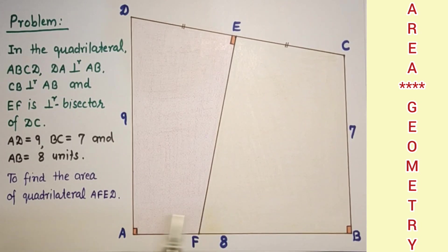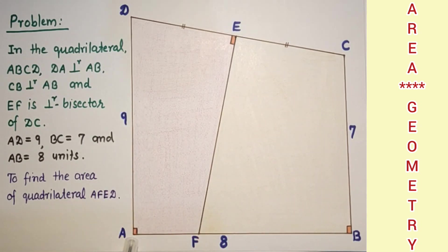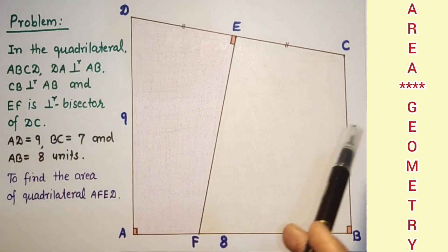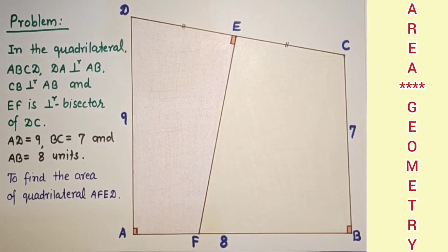Here is the question in front of us: in quadrilateral ABCD, DA is perpendicular to AB, BC is perpendicular to AB, and EF is also perpendicular to DC, where E is the midpoint of DC — meaning EF is the perpendicular bisector of segment DC.